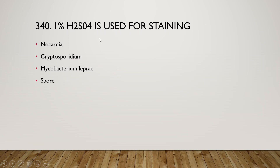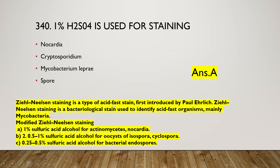1% H₂SO₄ is used for staining Nocardia. Ziehl-Neelsen staining is a bacteriological stain used to identify acid-fast organisms, mainly mycobacteria, first introduced by Paul Ehrlich. In the modified Ziehl-Neelsen staining: 1% sulfuric acid-alcohol is used for actinomycetes and Nocardia; 0.05%–1% sulfuric acid-alcohol for oocysts of Isospora and Cyclospora; and 0.25%–0.5% sulfuric acid-alcohol for bacterial endospores.